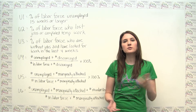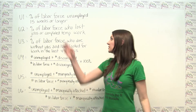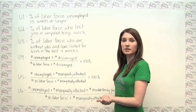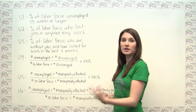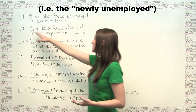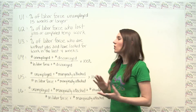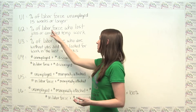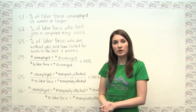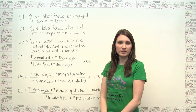We can think of U2 as a measure of gross job loss, since U2 specifically counts those people who either lost their jobs or completed temporary work and now have to seek other employment. Mathematically, this is just the percent of the labor force who lost jobs or completed temp work — the number of people who lost their jobs plus the number of people who completed temporary work, divided by the number of people in the labor force times 100%.